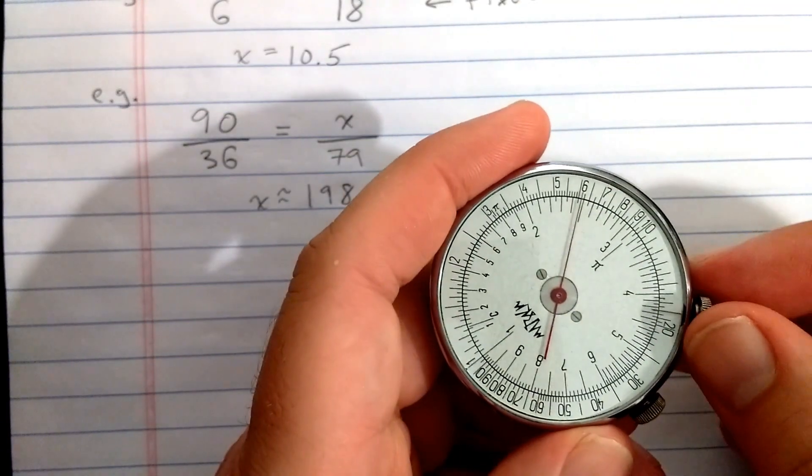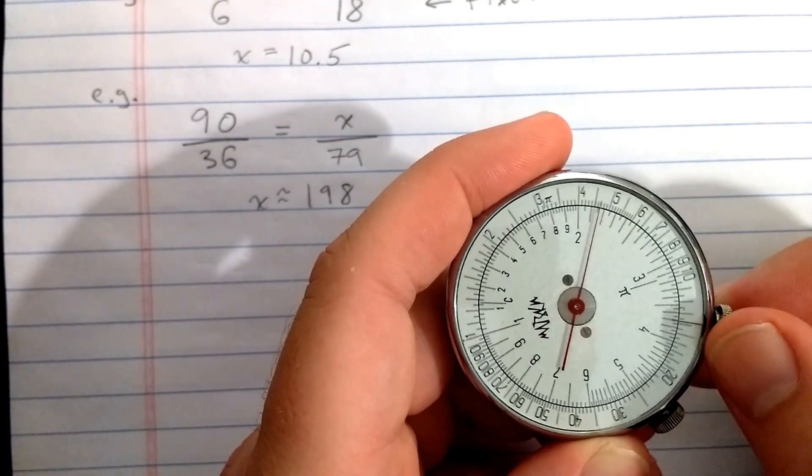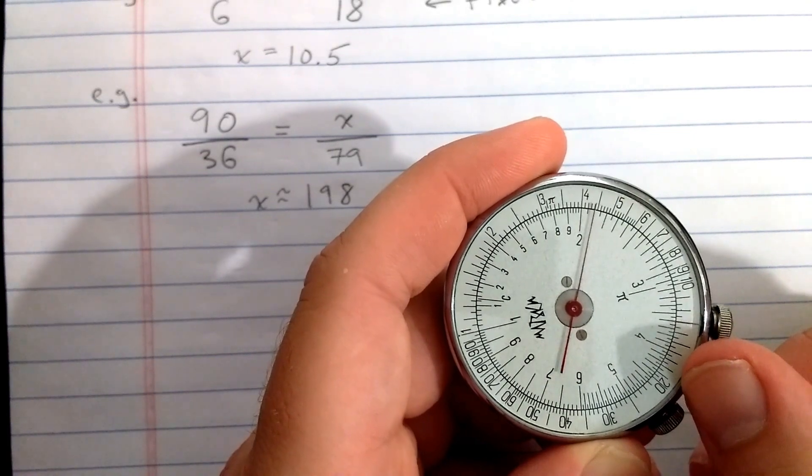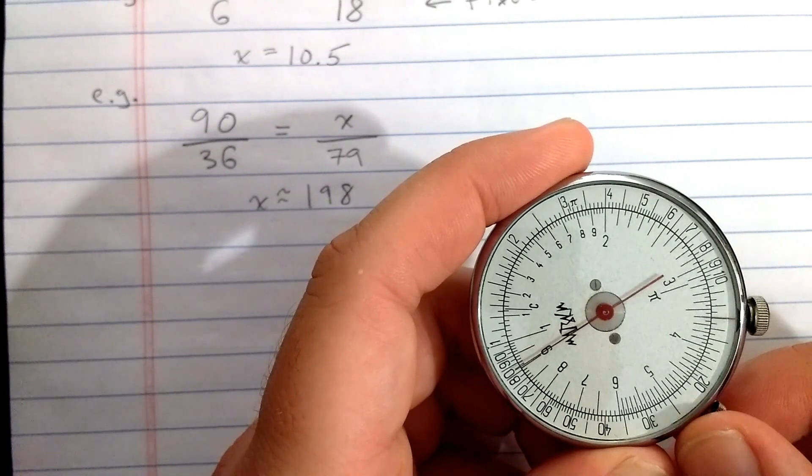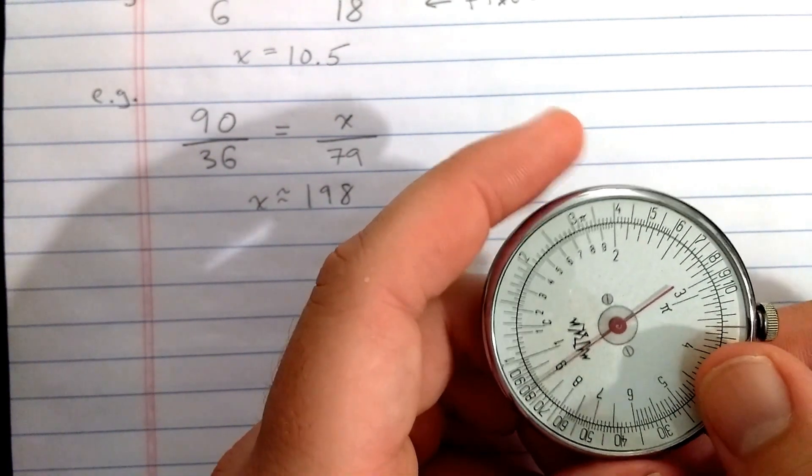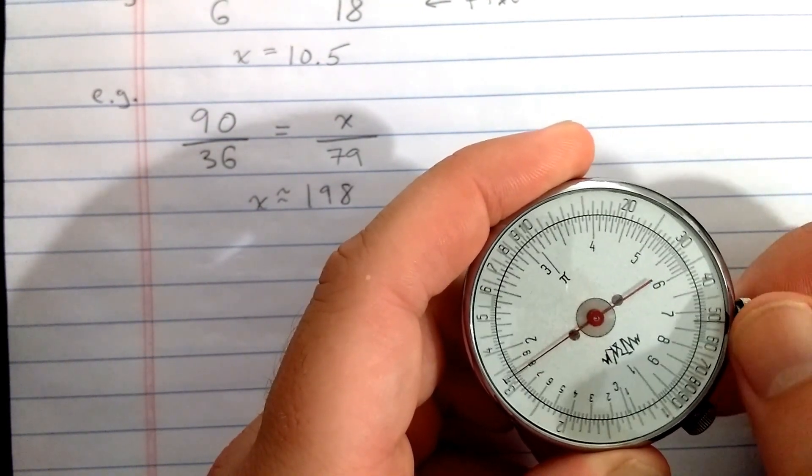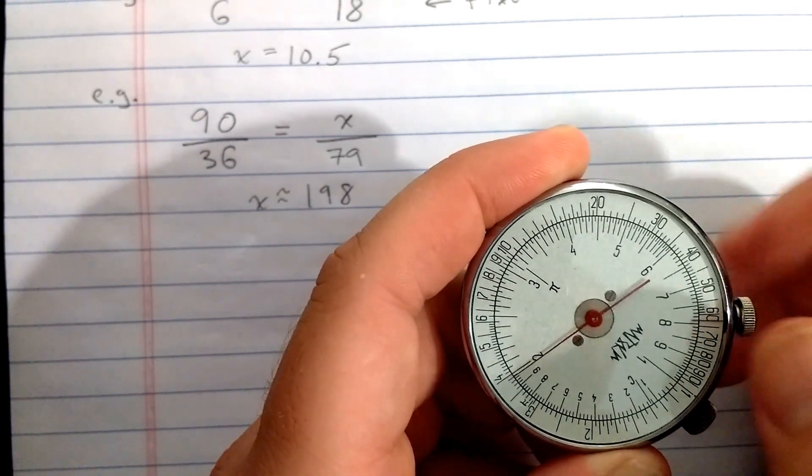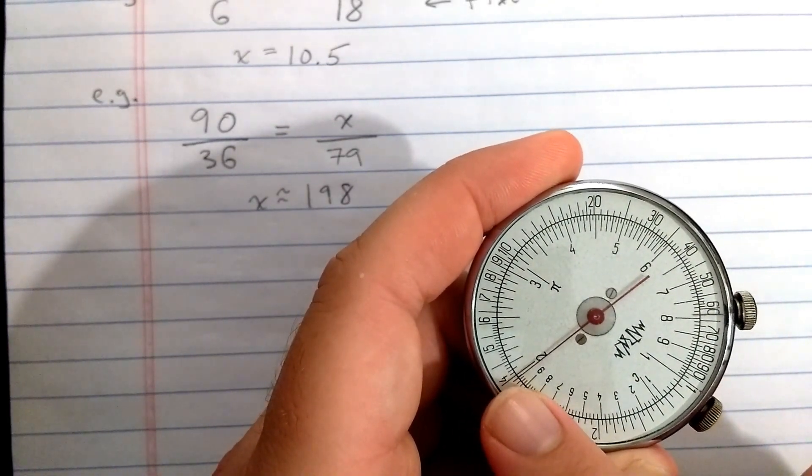Now let's just solve another proportion. So let's set 3.6 here. There's 3.5, 3.6. Remember to set the fixed indicator first. Then set 9. Remember we're using the inner scale. Then I will find 79 with the fixed indicator and result there about 198 is reading at the needle.